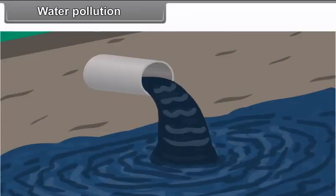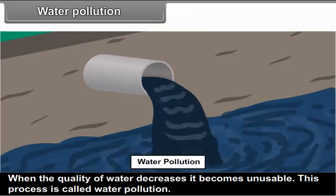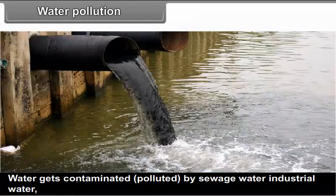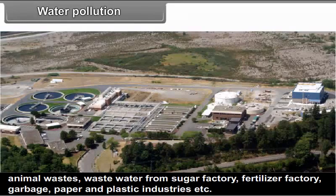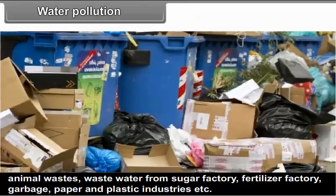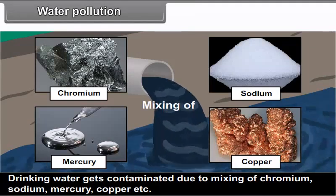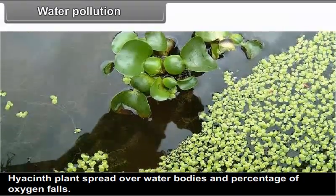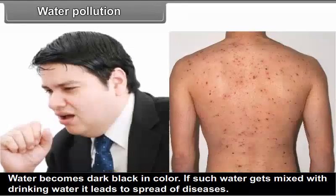Water pollution: When the quality of water decreases, it becomes unusable — this process is called water pollution. Water gets contaminated by sewage water, industrial water, animal wastes, wastewater from sugar factories, fertilizer factories, garbage, and paper and plastic industries. Drinking water gets contaminated due to the mixing of chromium, sodium, mercury, copper, etc. Hyacinth plants spread over water bodies and the percentage of oxygen falls, turning water dark black. If such water mixes with drinking water, it leads to the spread of diseases.